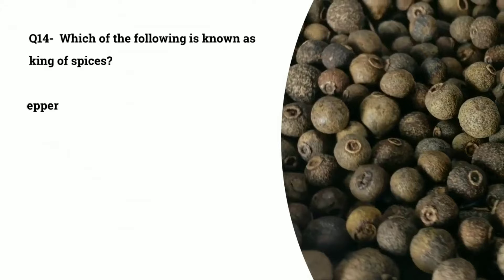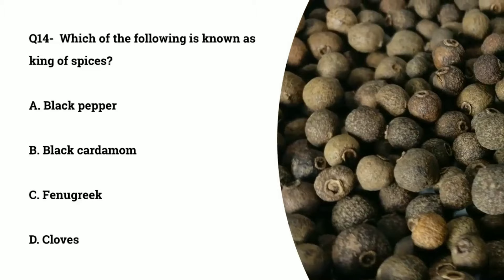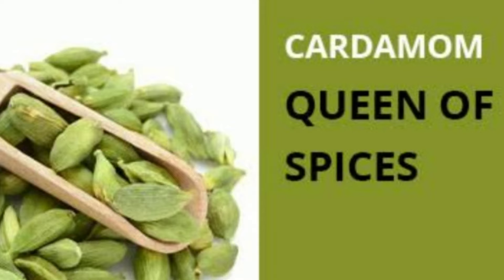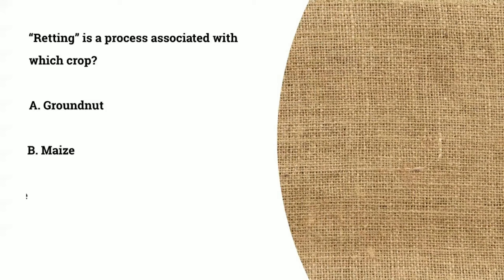Question number 14: which of the following is known as the king of spices? The options are black pepper, black cardamom, fenugreek, or cloves. The correct answer is black pepper. The king of spices is black pepper, whereas the queen of spices is cardamom. Question number 15: retting is a process associated with which crop?